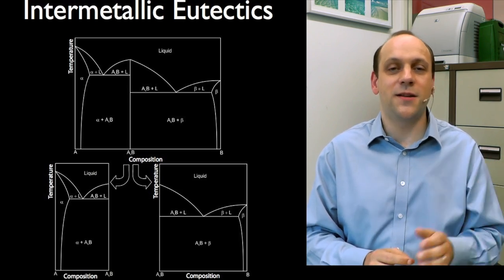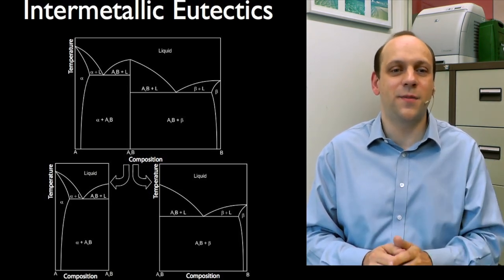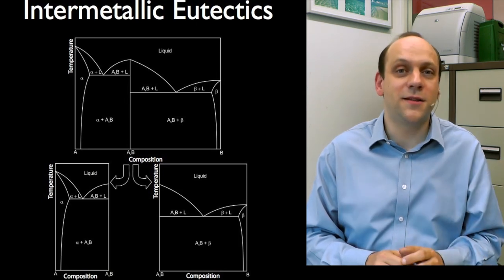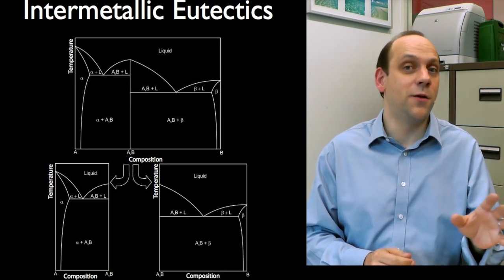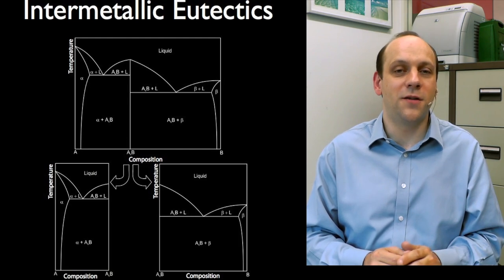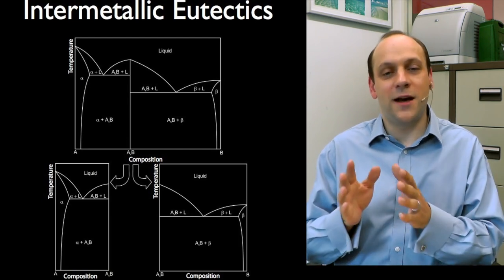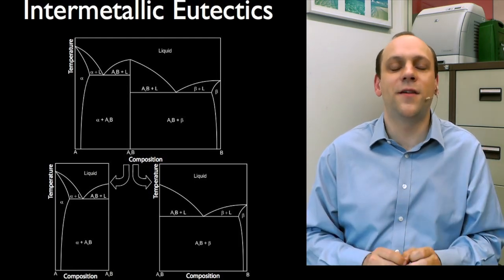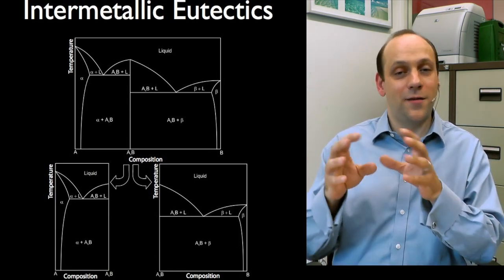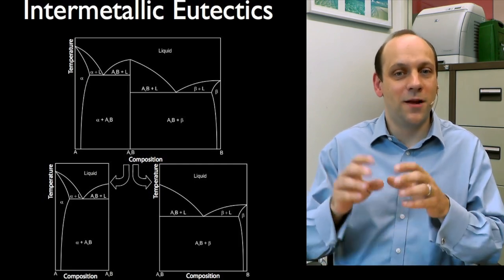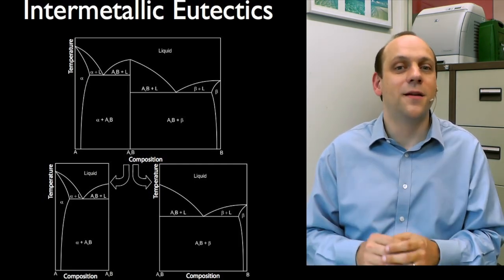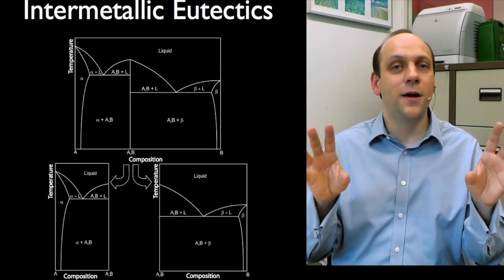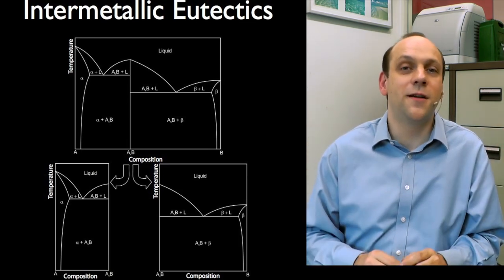To the left of A_X B, to the left and including A_X B, we've got an A, A_X B eutectic phase diagram, just like the one we've been looking at in normal binary eutectics. To the right and including A_X B, we've got an A_X B to B eutectic phase diagram. And again, that just looks like a binary phase diagram with two solid phases. And again, we'll be familiar. So we can split it into two and then we've got two phase diagrams we can deal with.